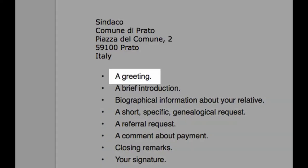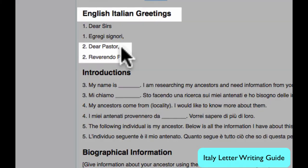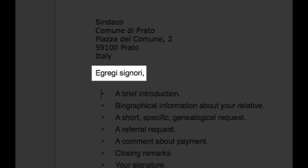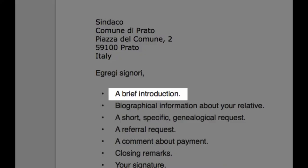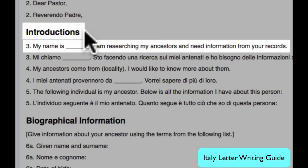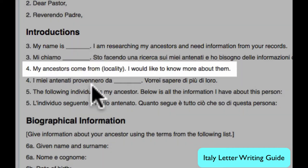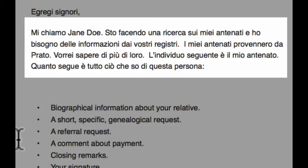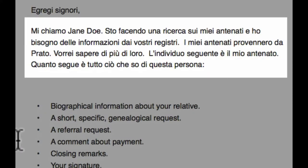Next, we are looking for the greeting. This greeting you use for writing to a church, so we want this greeting for government offices. Next, we will write a brief introduction — introducing yourself and your interest in genealogy, that your ancestors came from that town, and that you're now going to give information about the person you're looking for. There is our introduction.